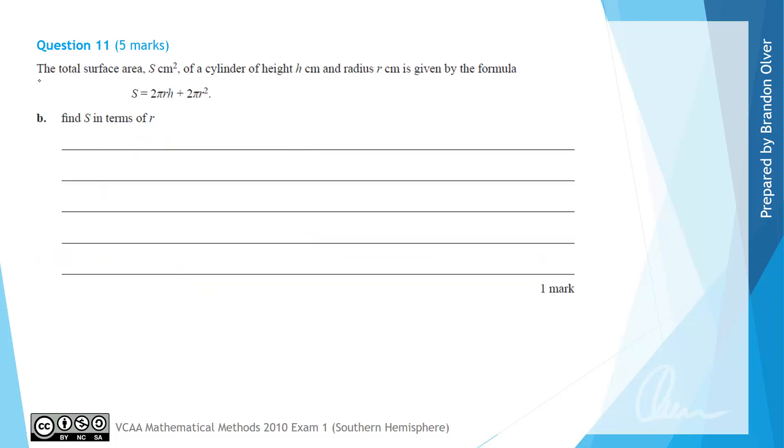For the next part of this question we're told that the total surface area S of a cylinder of height h and a radius of r centimetres is given by the formula S equals 2πrh plus 2πr². And for part B we're asked to find S in terms of r only.